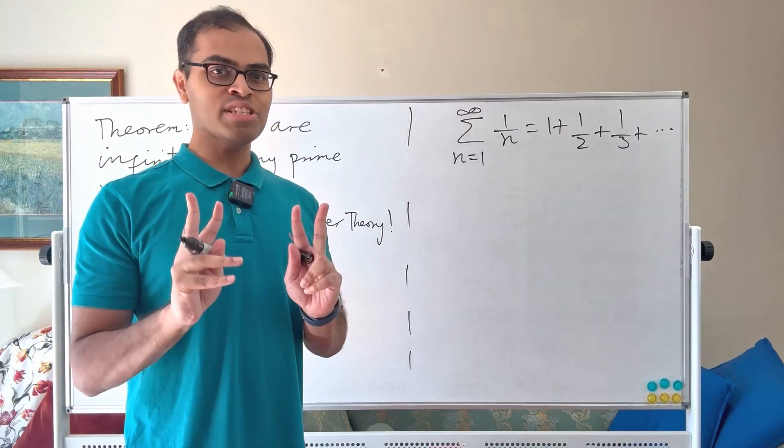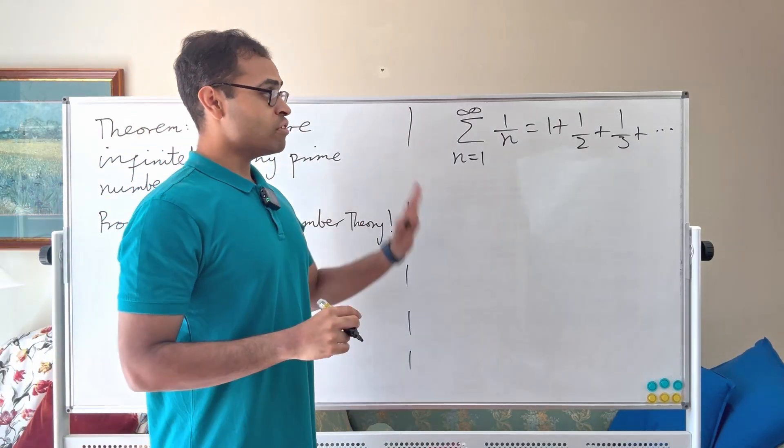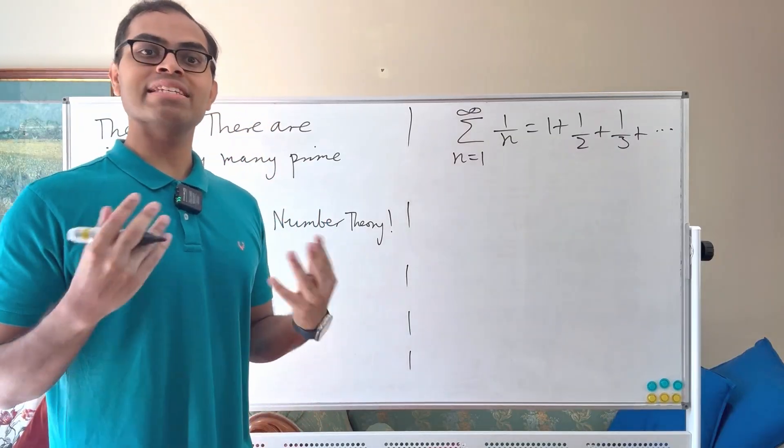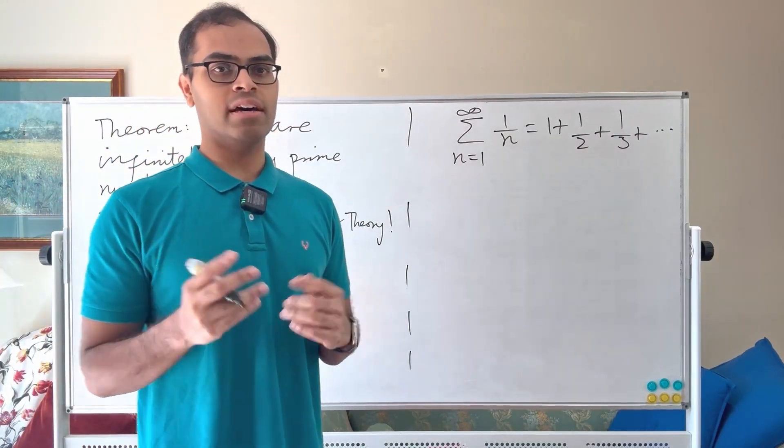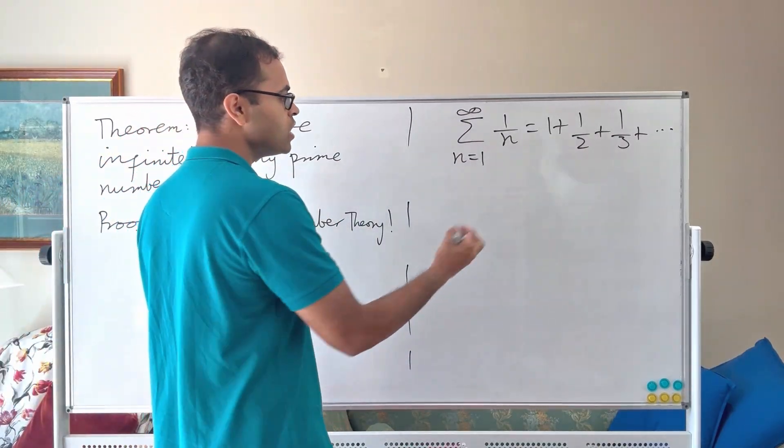Now what we're going to do is only going to be two steps. Step one is we're going to find another way of representing this sum as an infinite product and this is due to Euler. It's called the Euler product formula. So how does this go?